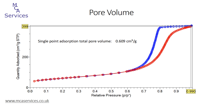From the full isotherm — sticking with the silica alumina type 4 isotherm — we can obtain quite a simple measurement of total pore volume. At the highest adsorption relative pressure of 0.99, we can see that 399 cubic centimetres of nitrogen have been adsorbed per gram of sample, and this, when converted to a liquid volume, gives a total pore volume of 0.609 cubic centimetres per gram of sample. We also need to be careful: the 0.99 relative pressure correlates to pores of approximately 180 nanometres diameter, so more accurately, the volume of open pores smaller than 180 nanometres diameter is 0.609 cubic centimetres per gram of sample.